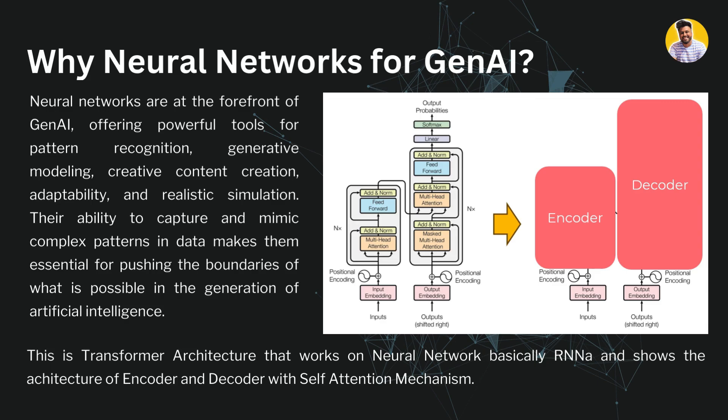This is the transformer architecture, which works on neural networks — specifically RNNs, since content generation is a sequential data problem. It shows the architecture of an encoder and decoder with a self-attention mechanism. We will study deep neural networks, NLP, and all related topics in upcoming videos.